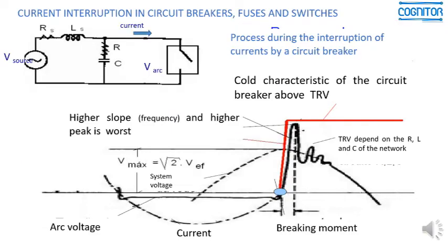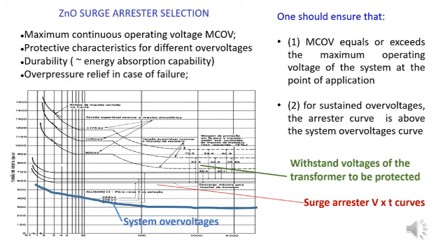What happens with a circuit breaker when it is going to break a certain current — a short circuit current. If you look at the lower part of the figure, you see one black line which represents the current, and this current is interrupted at the breaking moment where the voltage of the source MCOV equals or exceeds the maximum operating voltage of the system.